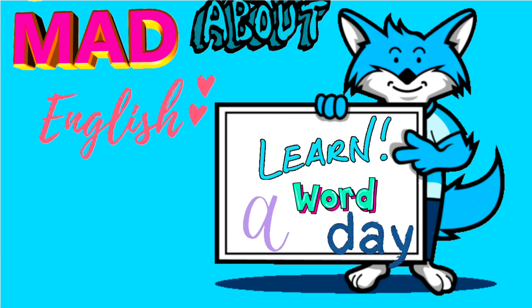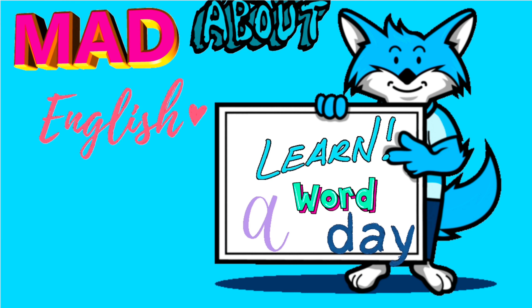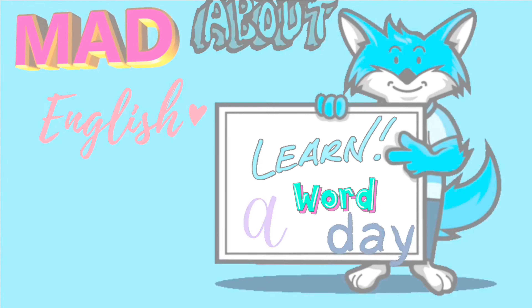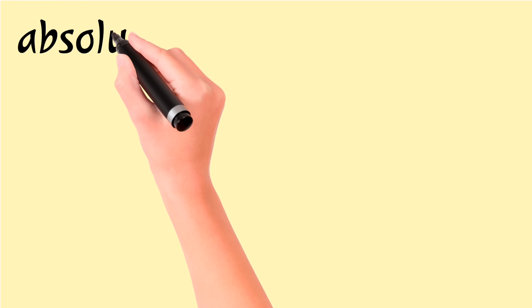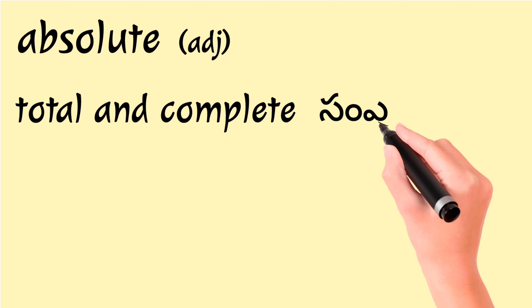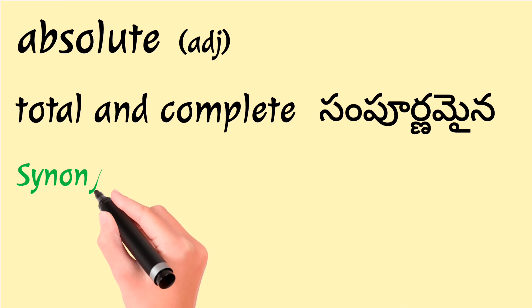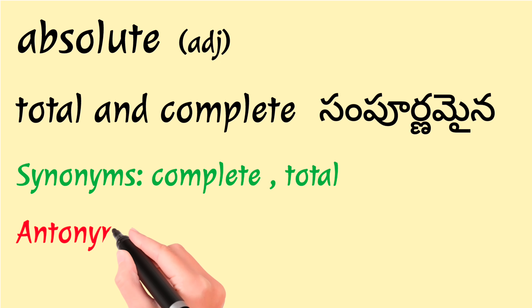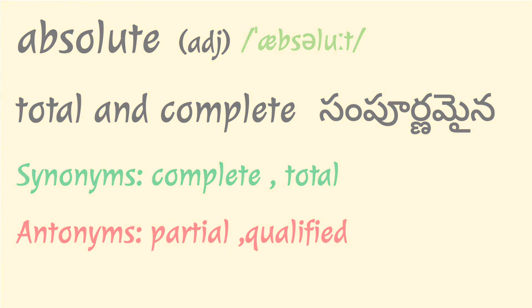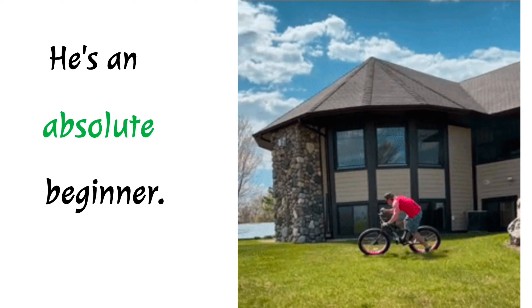Welcome back to Mad About English. Today's word is 'absolute' — it's an adjective meaning total and complete. Synonyms include complete and total; antonyms include partial and qualified. The first example is: he is an absolute...